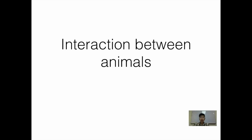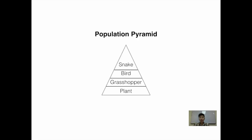The first thing I'm going to introduce to you today is the population pyramid. The key idea here is that the organism at the bottom of the population pyramid would always have the larger population because it has more energy. So as we go up the food chain, the population becomes smaller and smaller because the organisms contain less and less energy. The organism on top of the population pyramid would be a predator of the organism below.